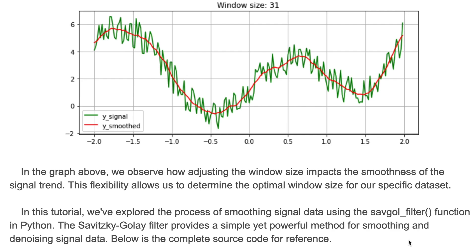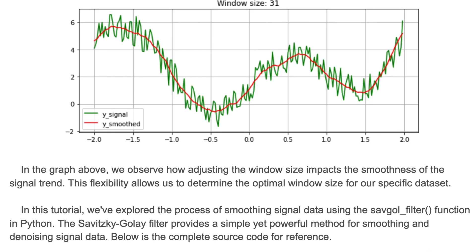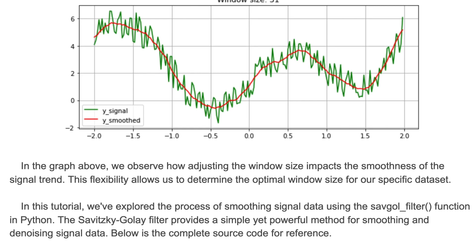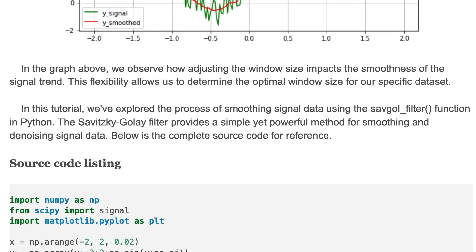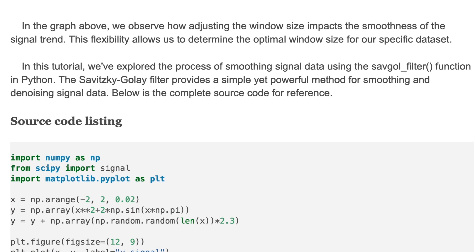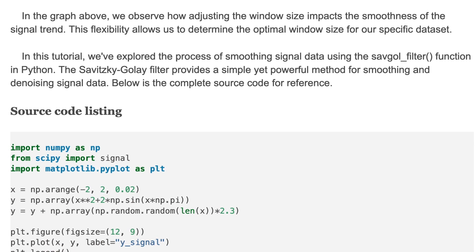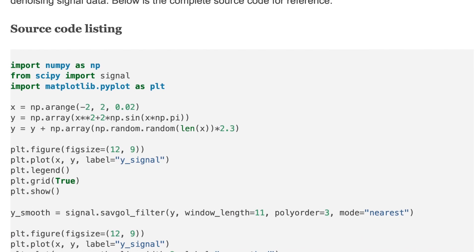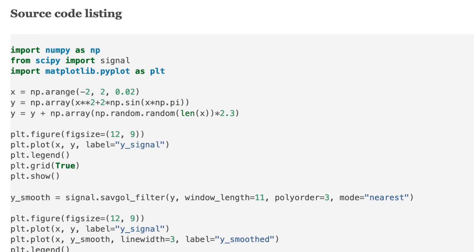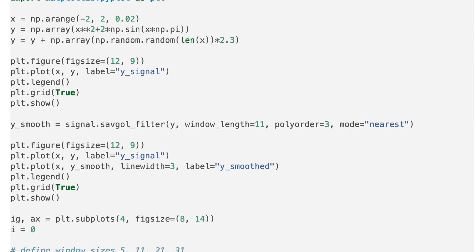In this tutorial, we briefly explored the process of smoothing signal data using the Savitzky-Golay filter function. The Savitzky-Golay filter provides a simple but powerful method for smoothing and denoising signal data. That's it for this tutorial. Here is the source code — I'll put the link to the source code in the description.